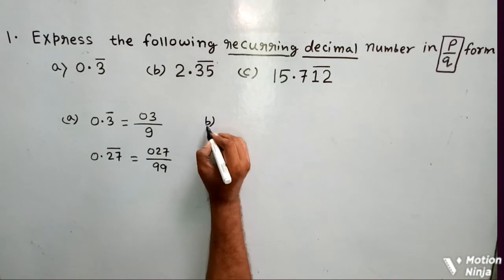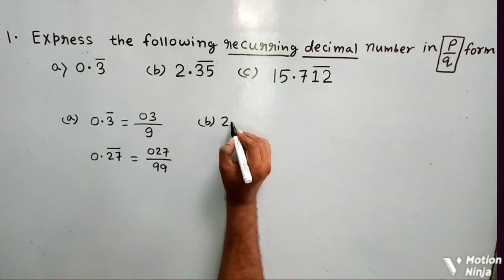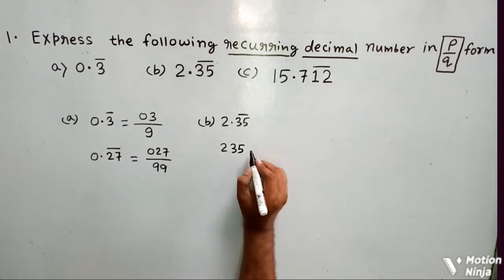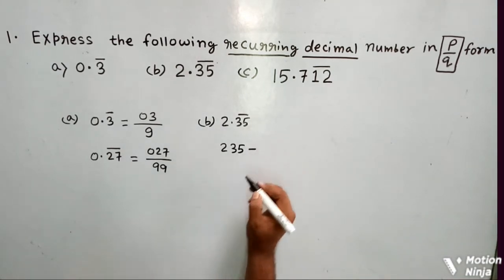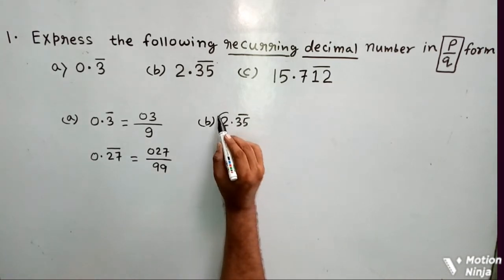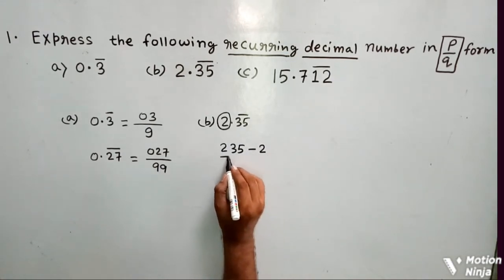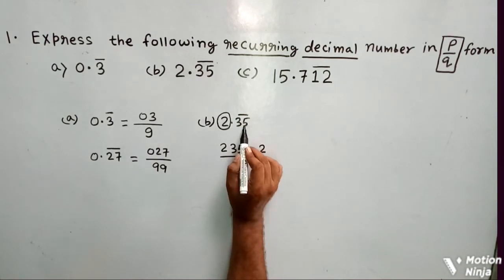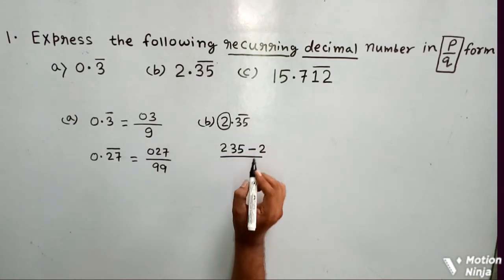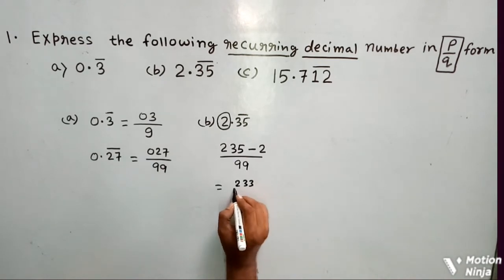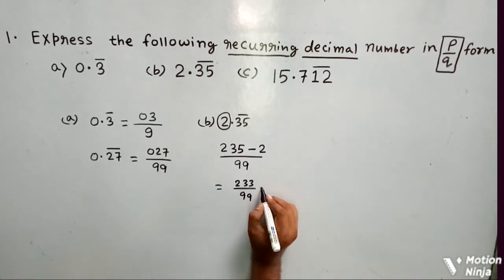If I consider question number b, it is given 2.35 bar. First you write down all the digits, then subtract the number which do not have a bar - that is 2. Now, how many digits have got a bar after decimal? Two digits. So here you will write two 9s. So the answer is 233 by 99.